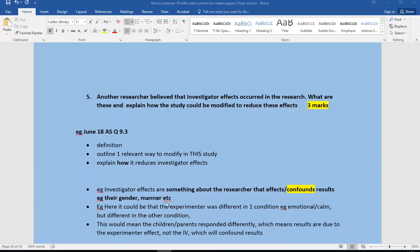So here it could be that the experimenter was different in one of the conditions. Let's say, for example, that they are very emotional in one condition, but they're a bit flustered in one condition, but they're calm in the other. Or you're using different experimenters in both conditions. Obviously, that's going to confound. Something about them is different in one of the conditions, and that will affect the results.